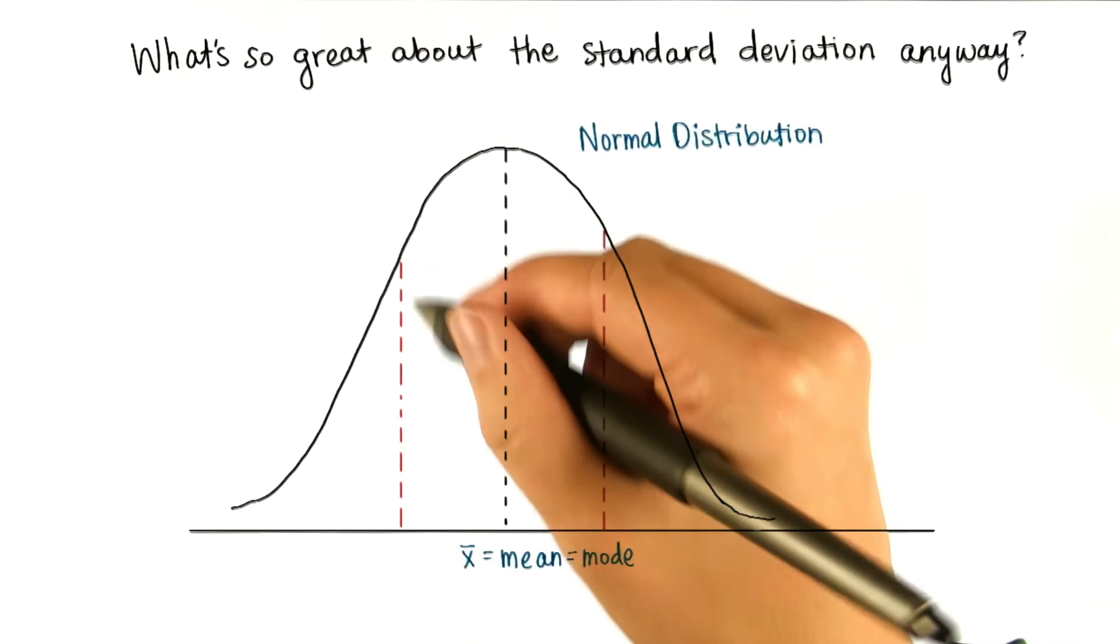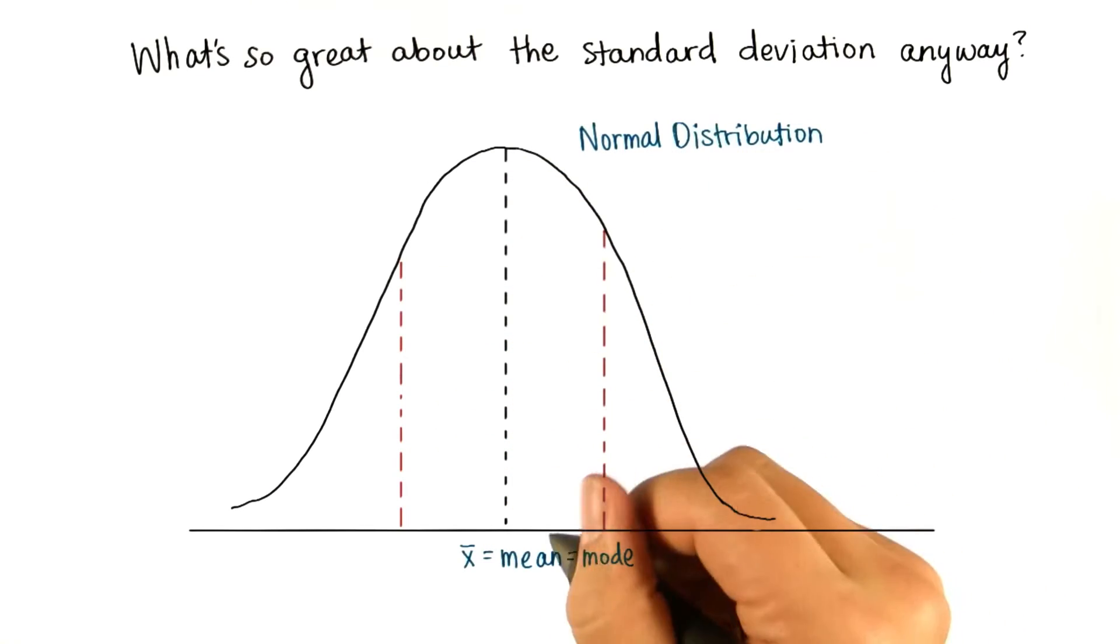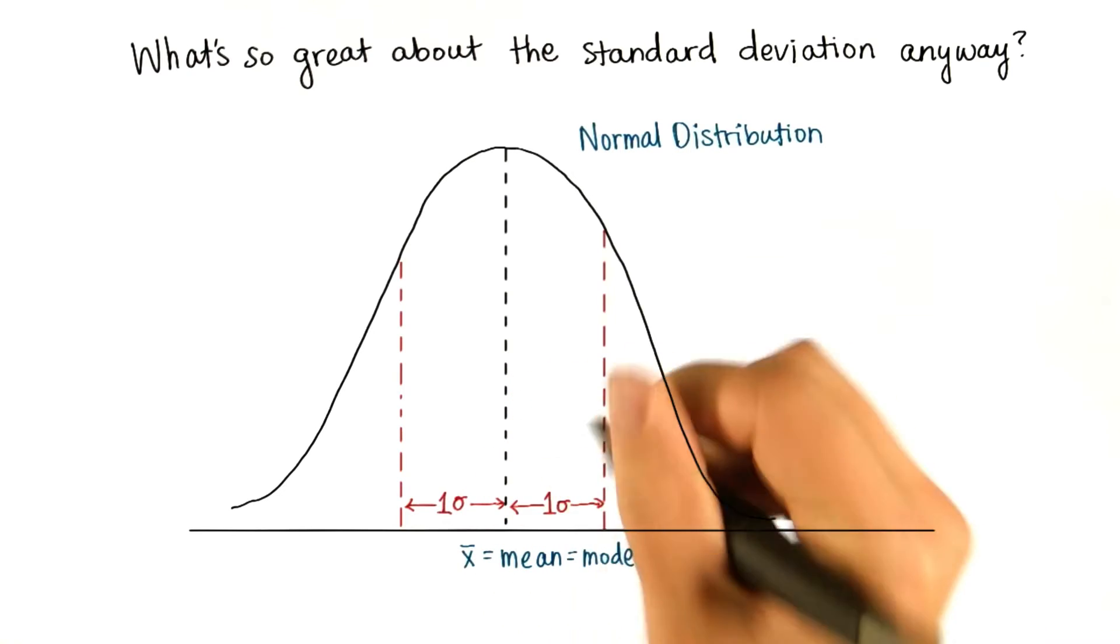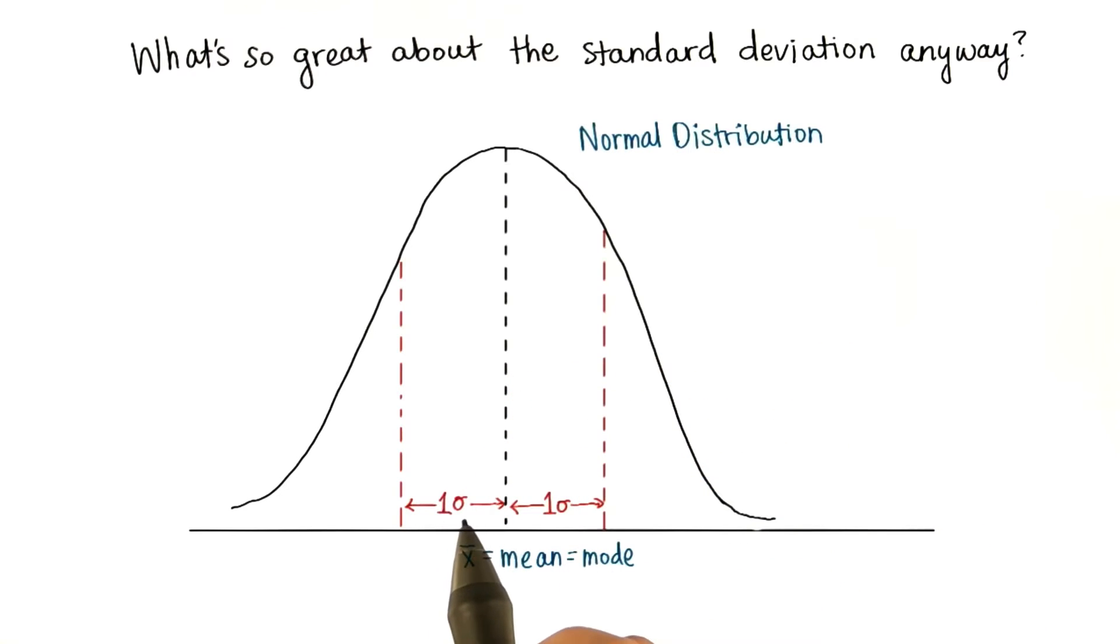Approximately 68% of the data falls within one standard deviation of the mean. So here's one standard deviation on each side, and I'm using the lowercase sigma to represent standard deviation. 68% of the data falls between this value,